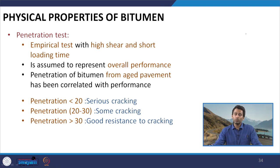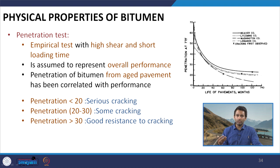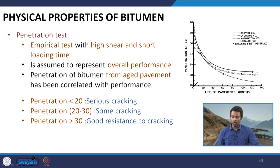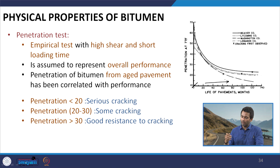If the penetration of bitumen from aged pavement is more than 30, it is not very stiff, it is still in a soft condition and those pavements have been found to be crack-resistant. This figure is taken from a study conducted in the US, where researchers measured the penetration values of bitumen from different periods of extraction from the field — in the unaged condition when first used for production of hot mix asphalt.